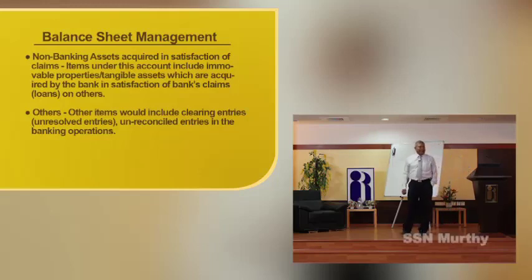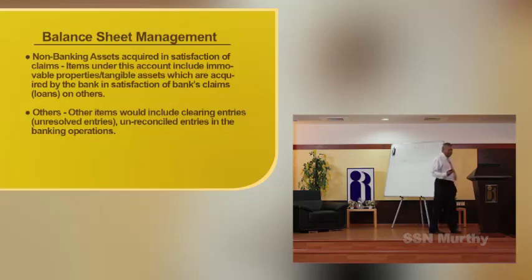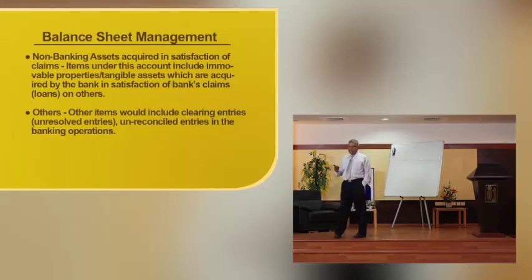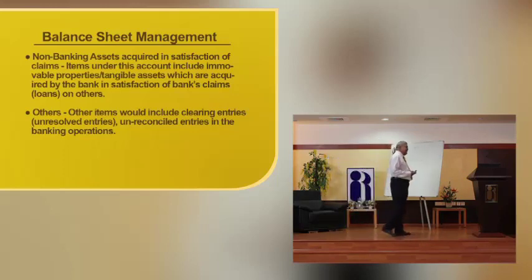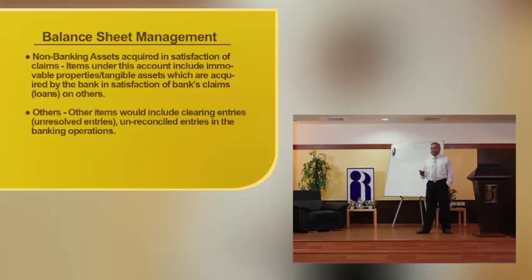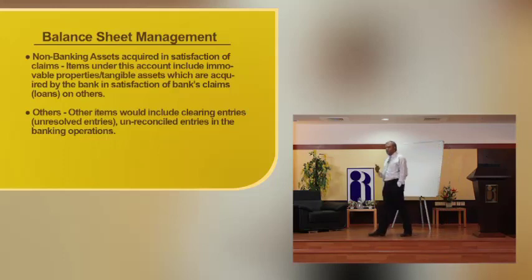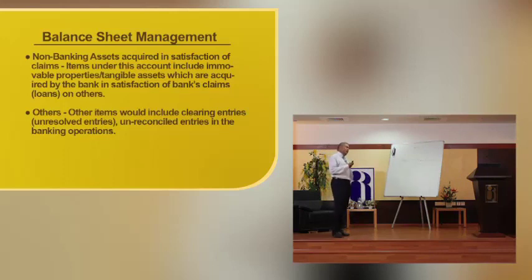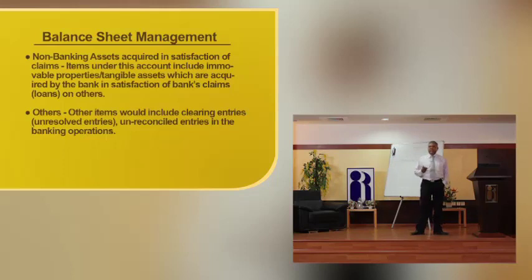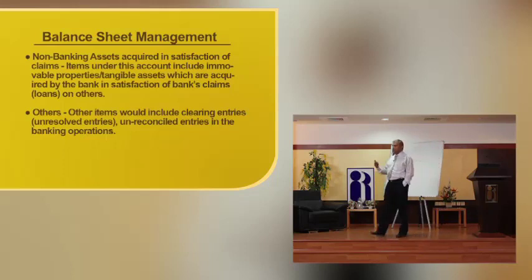The next type of asset is non-banking assets, created in satisfaction of clients. Suppose the bank is giving a loan against the mortgage of a building and that becomes an NPA — it means the borrowing is not paid in time. Through a surfacy action, the bank can bring this building for auction. If no bidders are coming, the bank can take it and own it. But there are restrictions under the Banking Regulation Act — they cannot own it forever; they have to sell it again in the market. If they are not selling it, it should be converted for use as a branch, at least for that purpose.